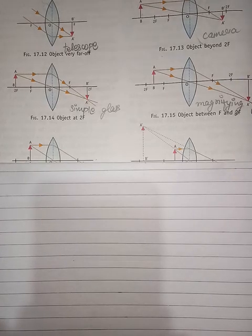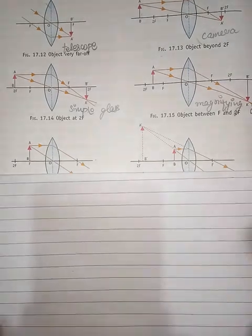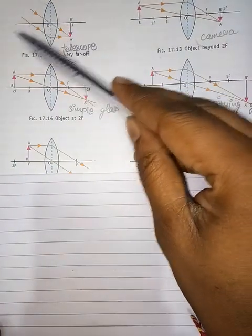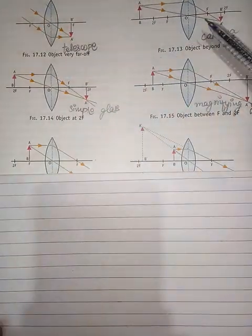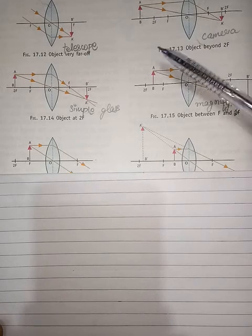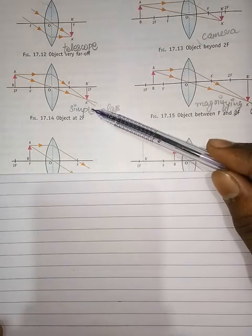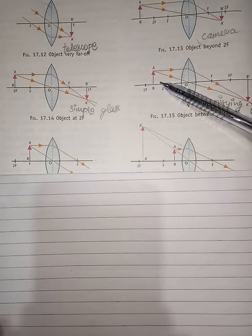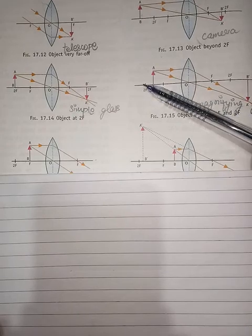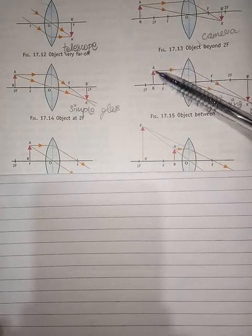Good morning everyone. In the previous video we were discussing the case study of image formation by convex lens. We discussed five cases: first when object was at infinity, second when object was beyond center of curvature, third when object was at center of curvature, and fourth when object was between center of curvature and focus.